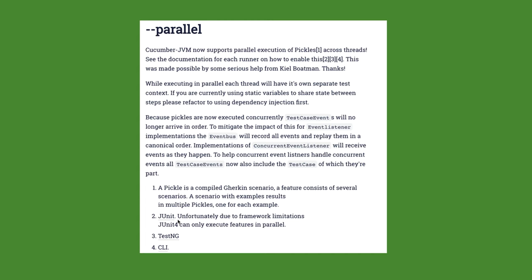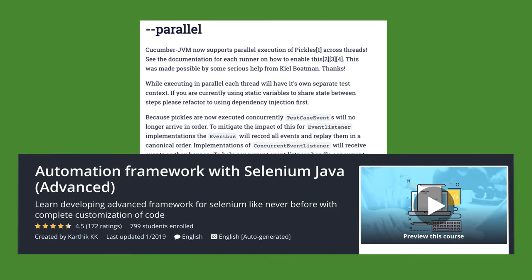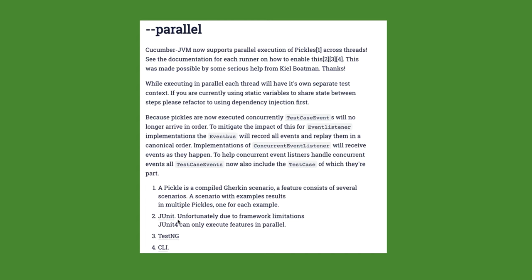While executing in parallel, each thread will have its own separate test context. If you are currently using static variables to share state between steps, please refactor to use dependency injection first. This is something we have already discussed extensively in our advanced framework development with Selenium Java course, where we refactored our code to use context injections, threading, and separate state threading.